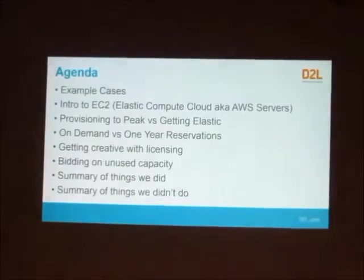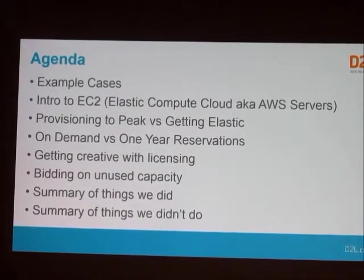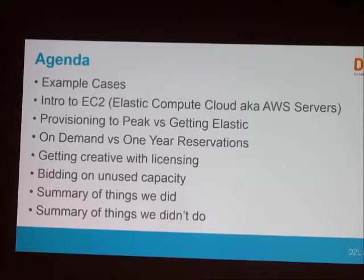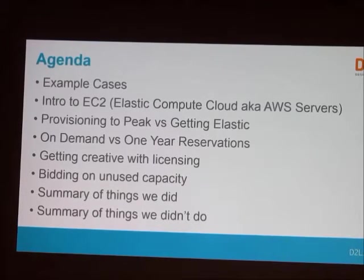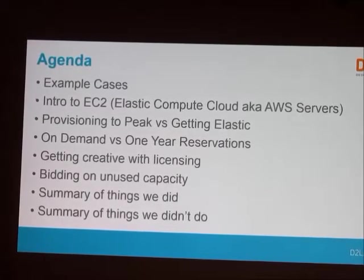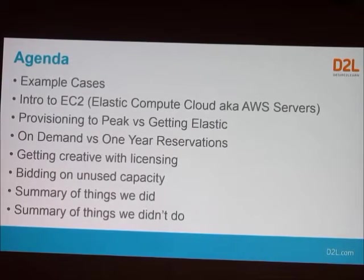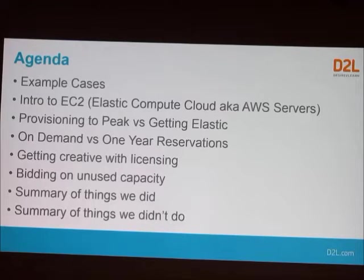I'm going to frame it with two examples of different types of load that play out very differently. My hope is that you'll be able to identify with one or the other. I'm going to give an intro to Elastic Compute Cloud, or EC2, which is what AWS calls their servers. I'll talk about the old hosting mindset, where if you need 100 servers on your worst day you have 100 servers every day, versus the cloud concept of elasticity and scaling on demand. Then I'll do the reverse and say when in the cloud you actually want to lock in, called reservations. We'll talk about getting creative with licensing while still following all laws. We'll talk about the spot market, where you can buy unused capacity at discount rates. And I'll go over a summary of what I did and didn't do, since I'm really focusing on servers.